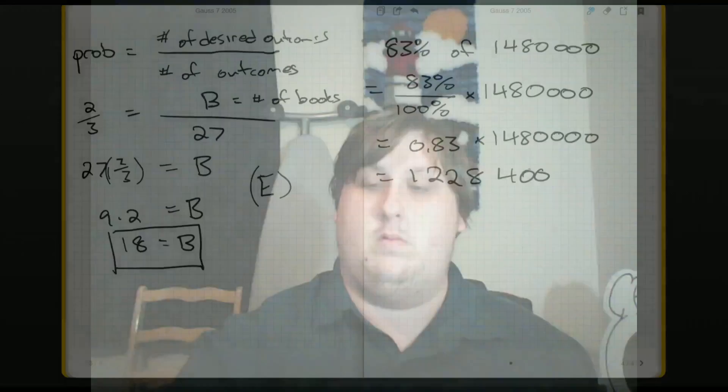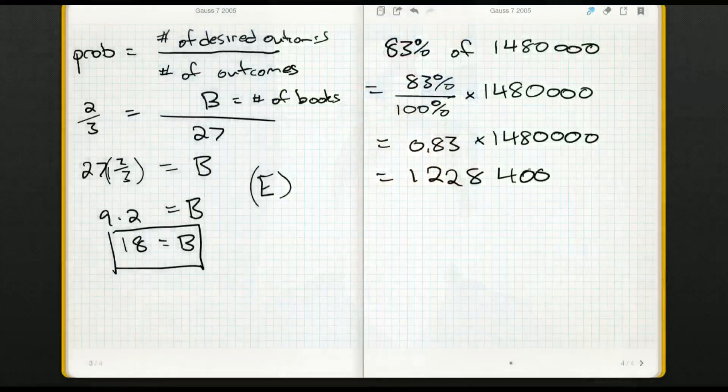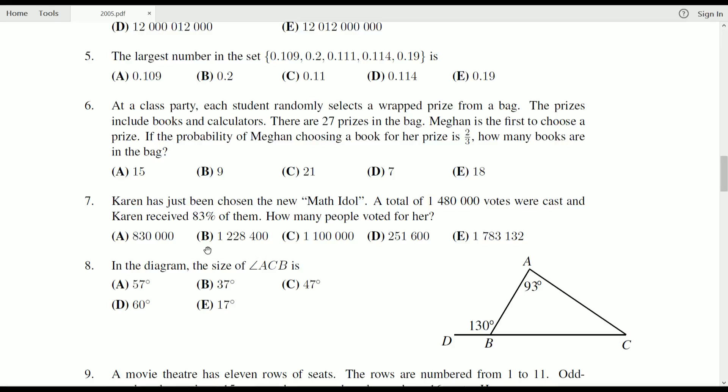So I'm looking at 1 million—I'm just going to write it down—1,228,400. Okay, so this is the number that I need to find and doesn't take too long. There's only five answers. We see it's B.